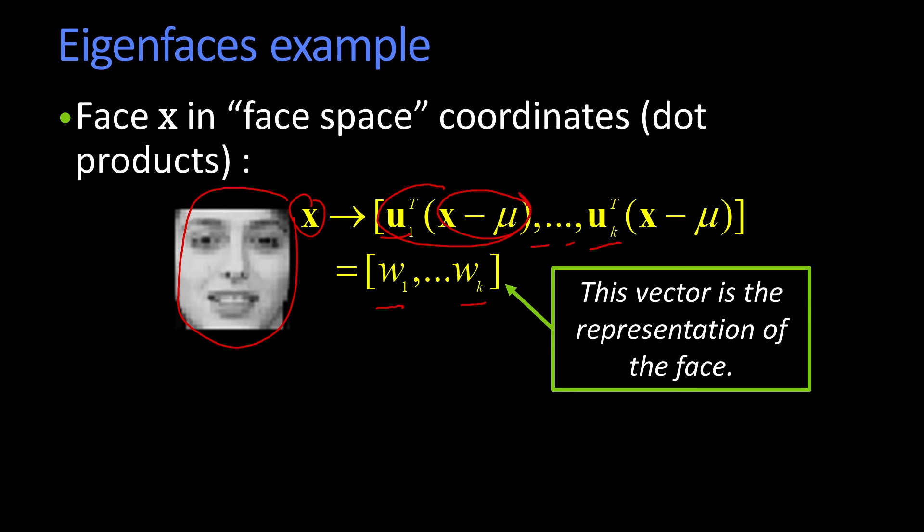So I've taken this 10,000-dimensional vector — 10,000 elements, 10,000 pixels — and I've reduced it to 20 numbers. How do we make use of this vector, these w's that are the coefficients?